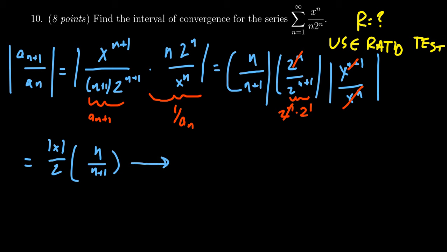Now as we take the limit as n goes to infinity, n over n plus 1 is just a balanced rational function, so this approaches 1. We get the absolute value of x over 2 times 1, which is the absolute value of x over 2.